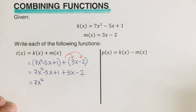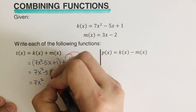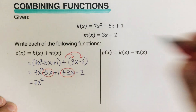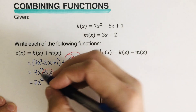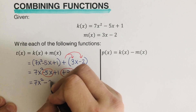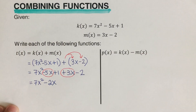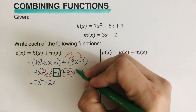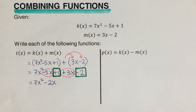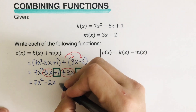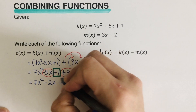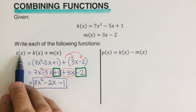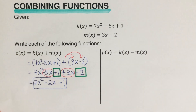Then we combine like terms. 7x squared is by itself. Negative 5x plus 3x gives negative 2x. The constant: positive 1 minus 2 is negative 1. So t of x equals 7x squared minus 2x minus 1.